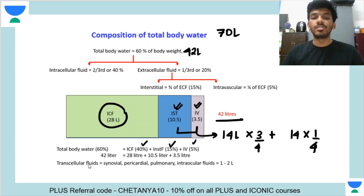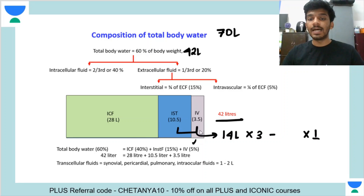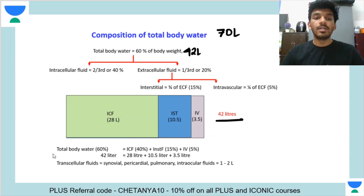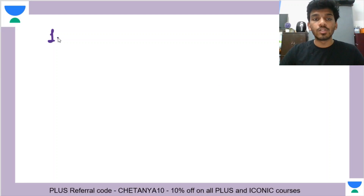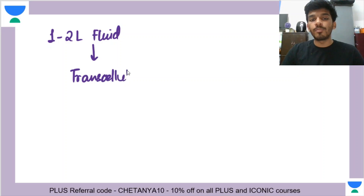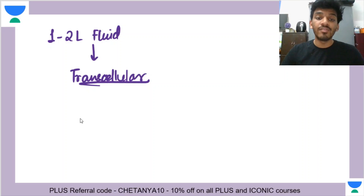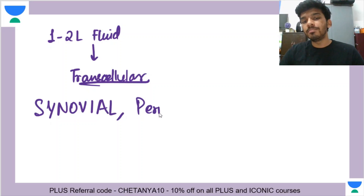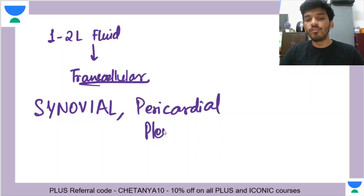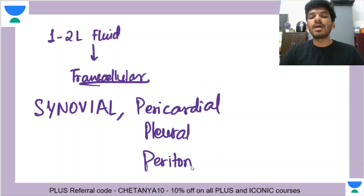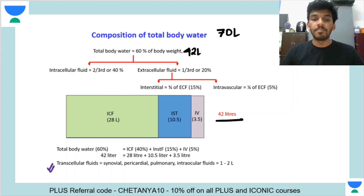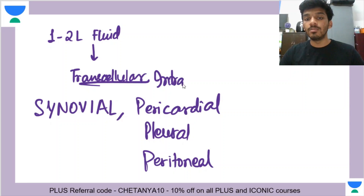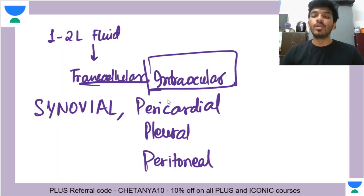Besides this entire distribution, there are some special kinds of fluids called transcellular fluids. Transcellular fluids compose approximately 1 to 2 liters of fluid volume. They are not present within cells and are not technically ECF — they're somewhere in between. The main component is cerebrospinal fluid. Besides that, pericardial fluid, pleural fluid, and peritoneal fluid are all transcellular fluids present in your body cavities. Another example is intraocular fluid — the aqueous humor.